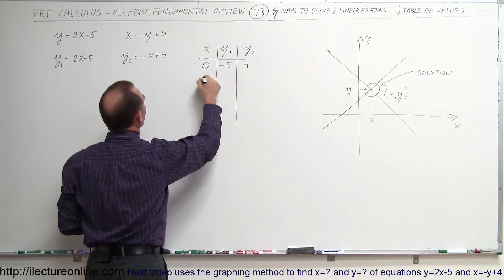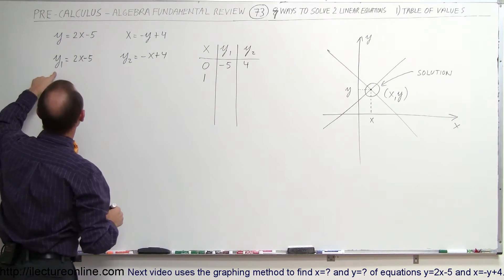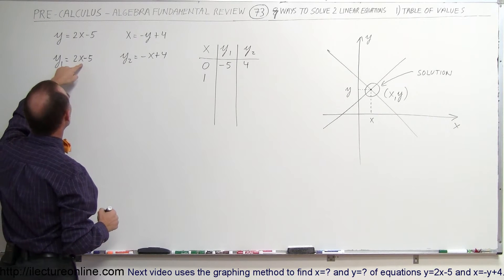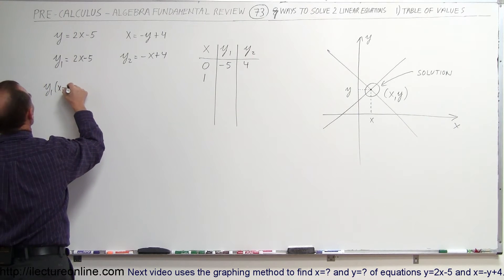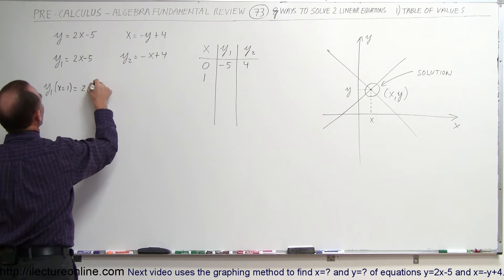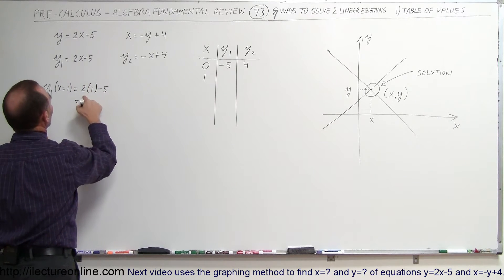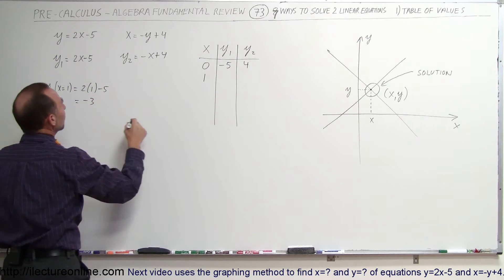All right, let's try the value x equals 1. When x equals 1, we get y equals 2 times 1 minus 5, so y1, when x equals 1, is equal to 2 times 1 minus 5. So that's 2 minus 5 or minus 3. So for y1, we get minus 3,